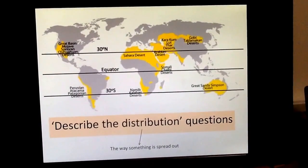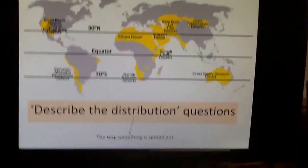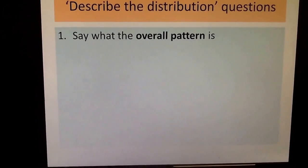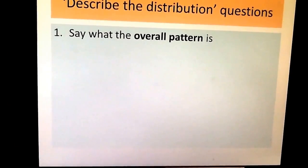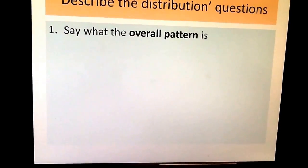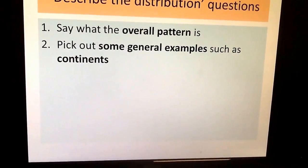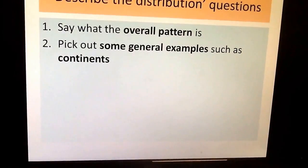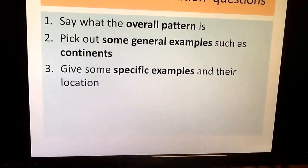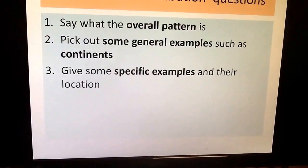The rules I'm going to give you could apply to any question that asks you to describe the distribution of something. Here are the rules. Rule number one: say what the overall pattern is — in general, tell me what the overall pattern is. Rule two: pick out some general examples, such as continents. Rule three: give some specific examples — these might be countries, named deserts, or towns and cities.